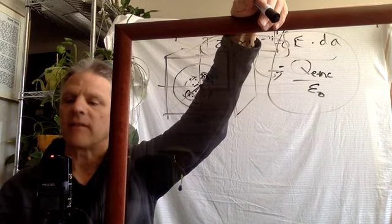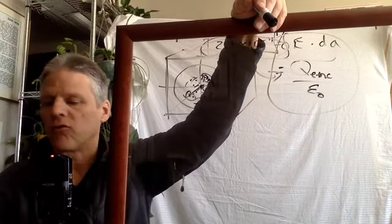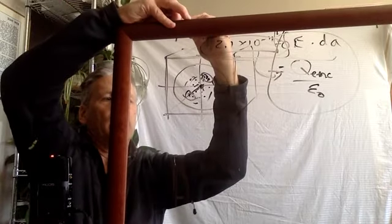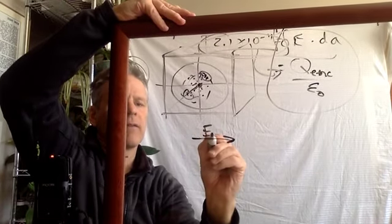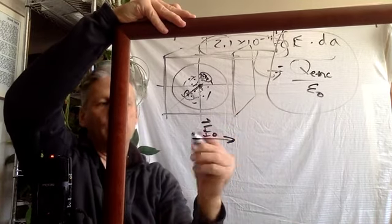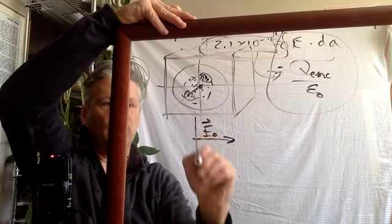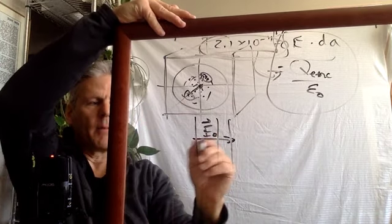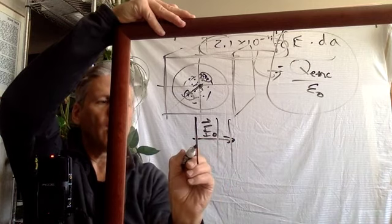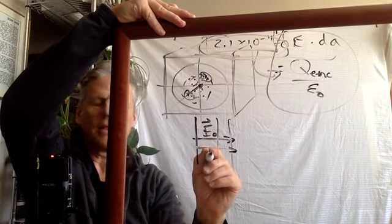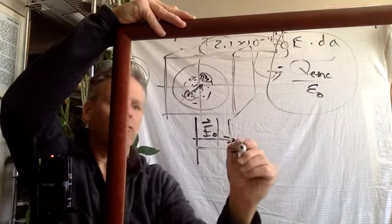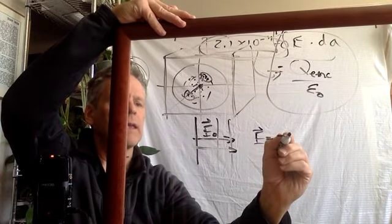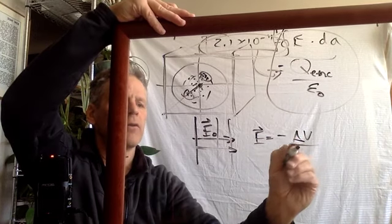Number four: the electric field in a given region is constant. What is the potential in that region? We have some E zero going in one direction. You know this means it is perpendicular to the equipotential lines, which means we have a gradient in the electric potential. E is defined as being equal to delta V over delta X for constant E.